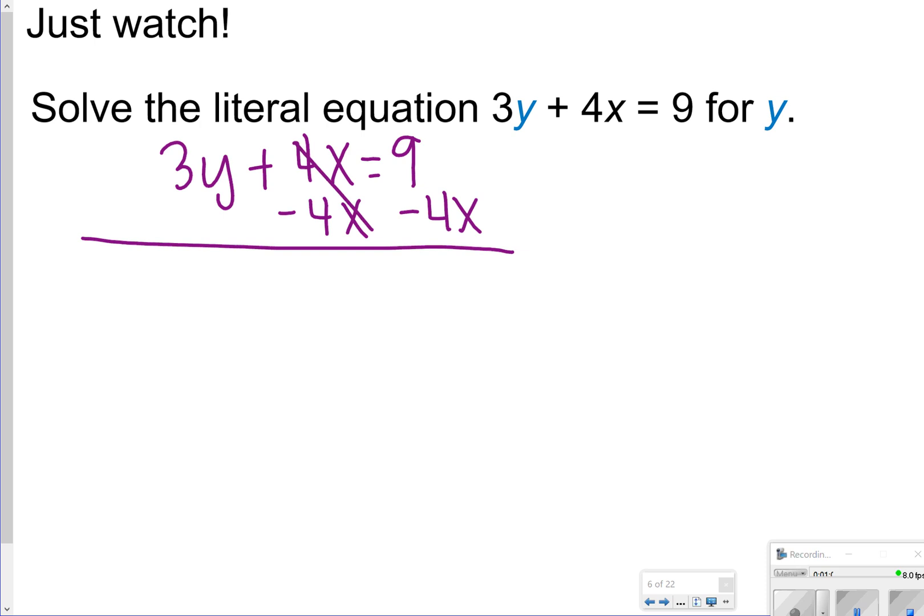These 4x's I'm going to cancel out, so I just basically solved using the inverse operation. So now I have 3y equals 9 minus 4x. The last thing I need to do would be to divide everything by 3.